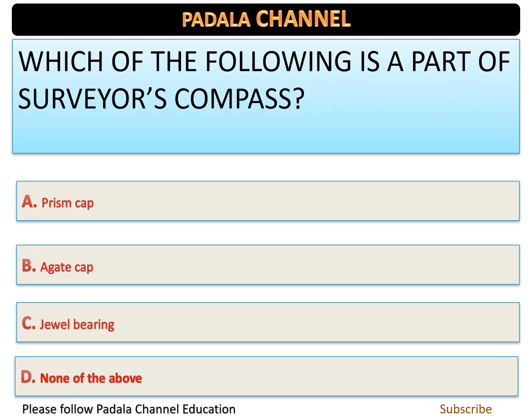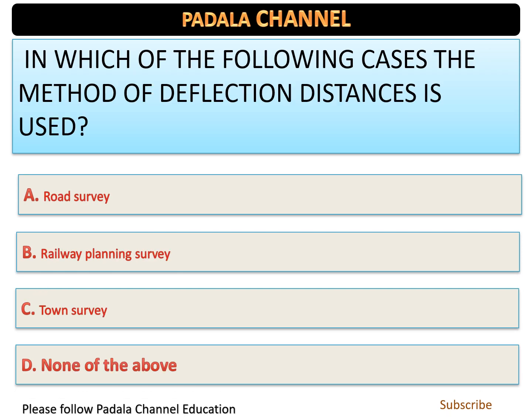Which of the following is a part of the surveyor's compass? The options are: option A — prism cap, option B — gate cap, option C — GL bearing, option D — none of the above. The correct answer is option C — GL bearing.